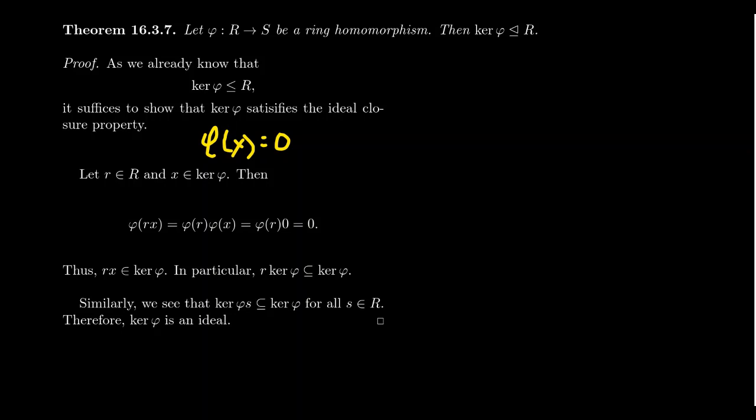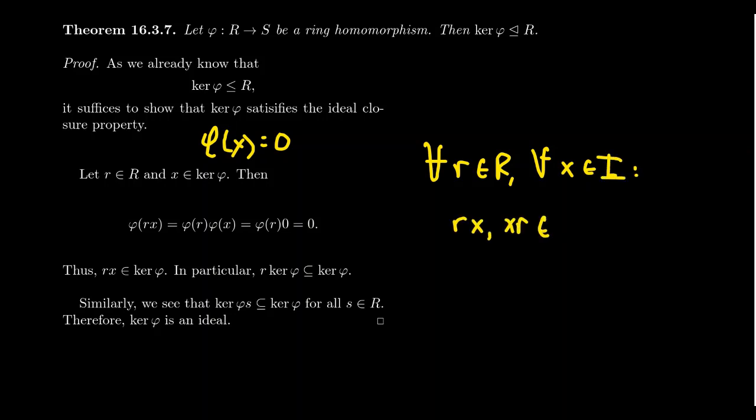This ideal closure — for all r in the ring and all x in the ideal, rx and xr belong to the ideal — is exactly what kernels do for ring homomorphisms. Therefore, this is exactly the object we need if we want to quotient out to form a quotient ring. Ideals are, in fact, the ring-theoretic analog of a normal subgroup. That brings us to the end of lecture 39 for Math 4220, and the end of lecture 13 for Math 4230, Abstract Algebra 2.